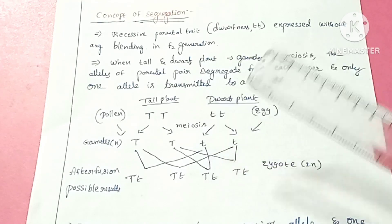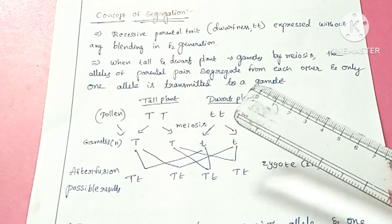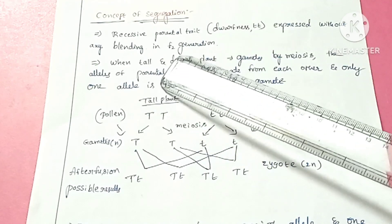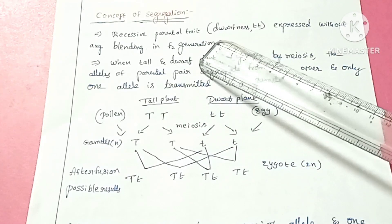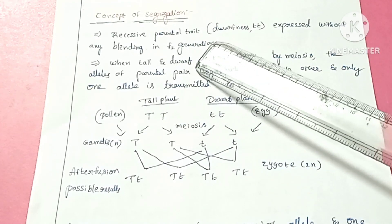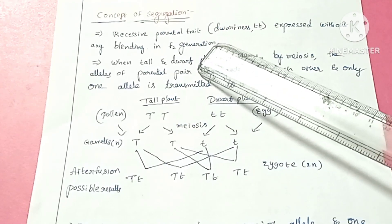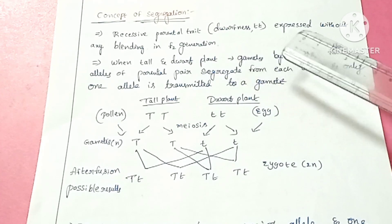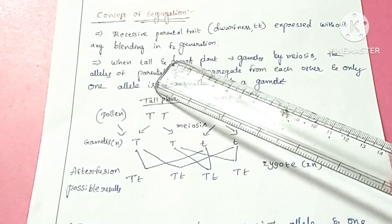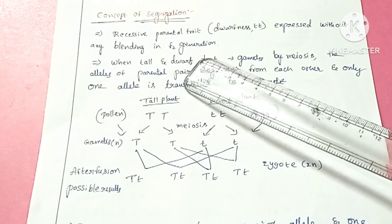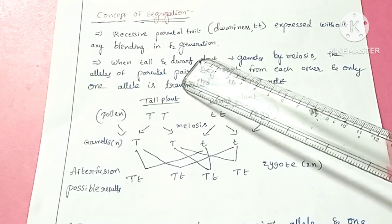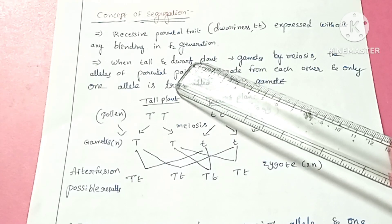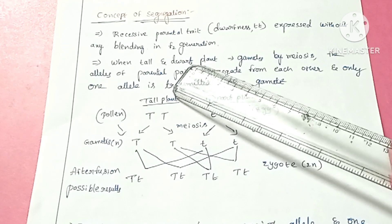From the above observations, the recessive parental trait — that is dwarfness — which contains small d, small d, is expressed without any blending in the F2 generation. Without blending means without mixing of characters.